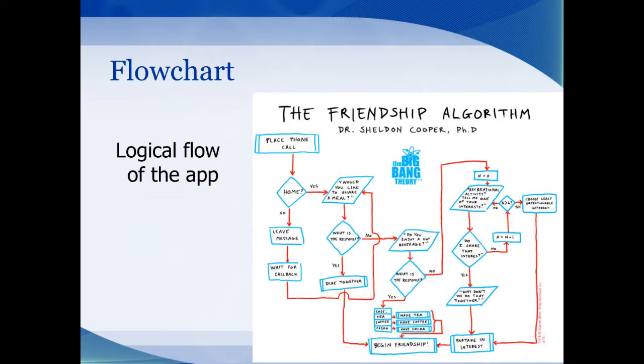Lastly, you need to have the design flow in the application. This is usually done with a flow chart. One of my favorite flow charts is from the Big Bang Theory, the friendship algorithm where Sheldon tries to make a friend. This can also be done with an application. Where does the project start? What decisions will take the user to their desired screen?